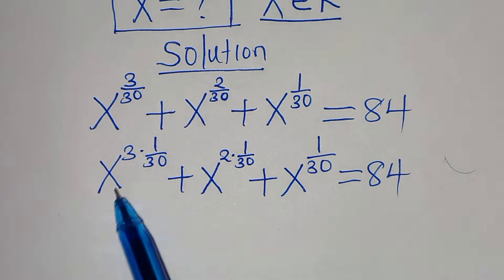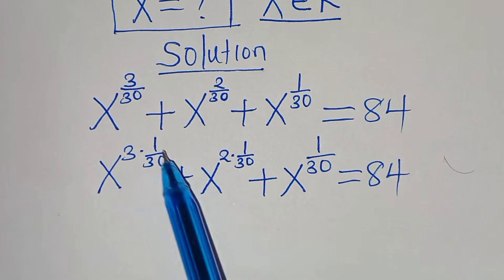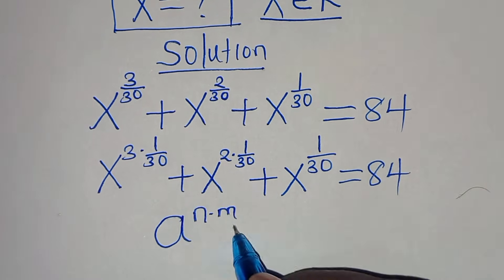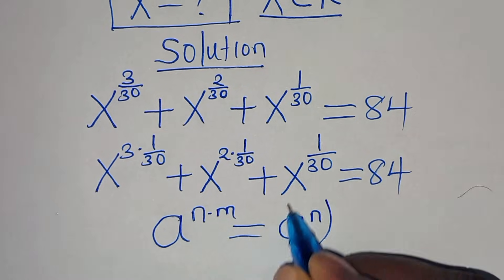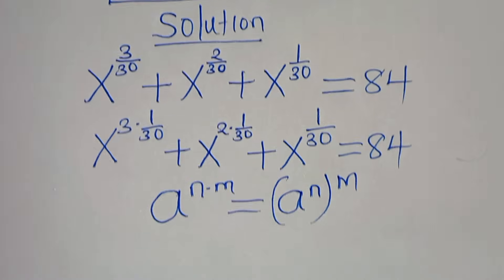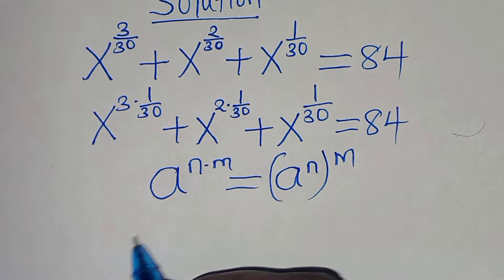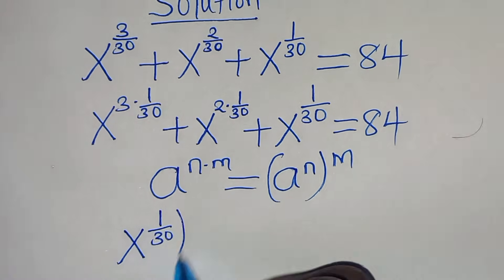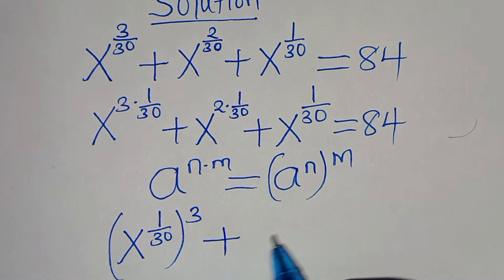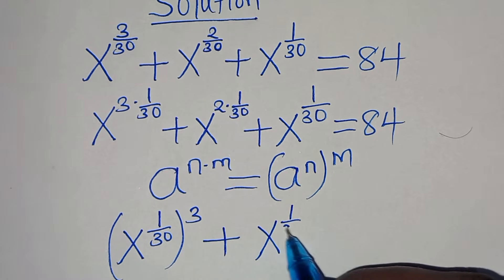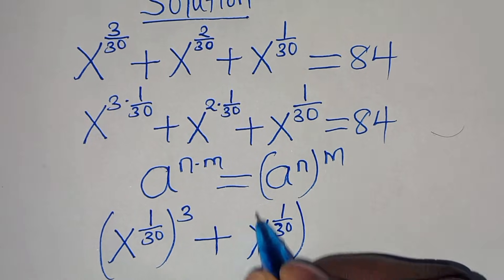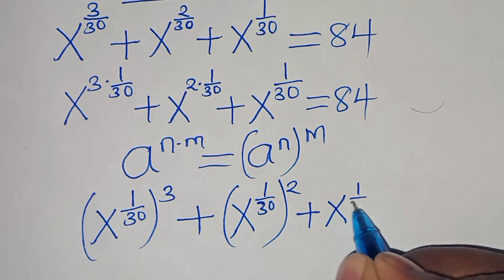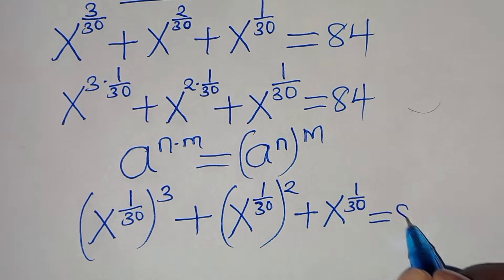Now x to the power of 3 over 30 is the same as x to the power of 3 times 1 over 30, and similarly for the other terms. These are in the form a to the power of n times m, which we can express as a to the power of n, raised to the power of m. Applying this exponent property, we have x to the power of 1 over 30, raised to the power of 3, plus x to the power of 1 over 30, raised to the power of 2, plus x to the power of 1 over 30, equals 84.